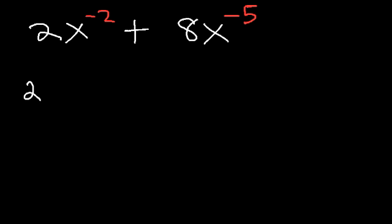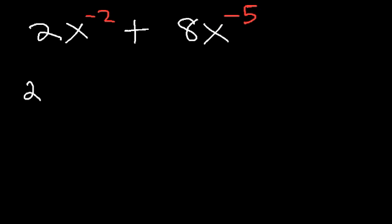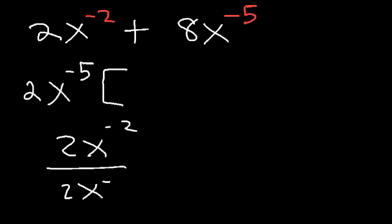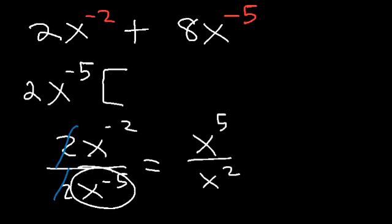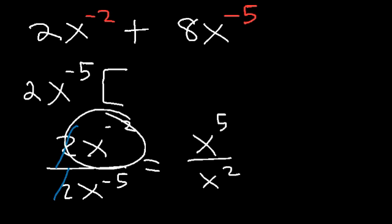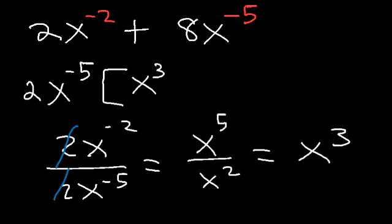The GCF will contain a 2. Now which number is smaller on a number line: negative 2 or negative 5? Negative 5 is lower, so we take out x to the negative 5. To find what goes inside, we divide: 2x to the negative 2 divided by 2x to the negative 5. The 2s cancel, and moving the negative exponents — x to the negative 5 moves to the top as positive 5, and x to the negative 2 moves to the bottom as positive 2 — giving x to the third power.